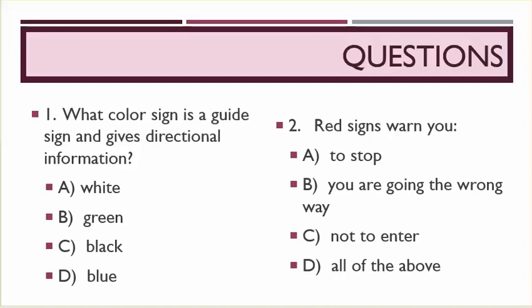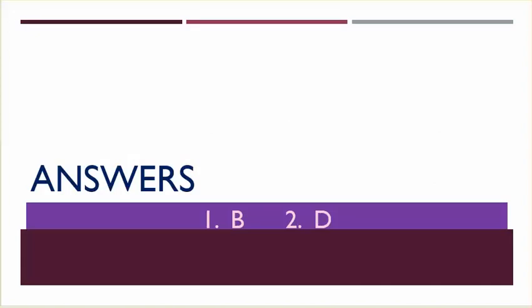Red signs warn you, A: To stop. B: You are going the wrong way. C: Not to enter. D: All of the above. B. Number one was B. Number two was D.